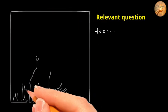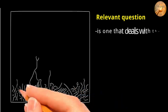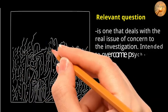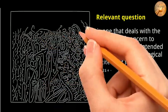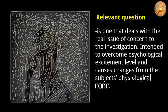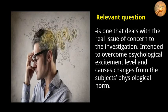A relevant question is one that deals with the real issue of concern to the investigation, intended to overcome the subject's psychological excitement level and cause changes from their physiological norm. These questions include asking whether the examinee perpetrated the crime or knows who did, and questions about particular pieces of evidence that would incriminate the guilty person.